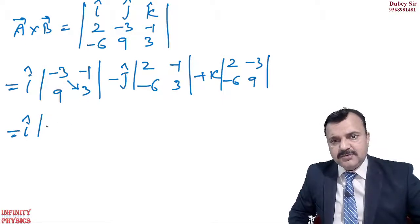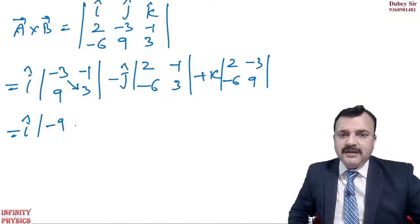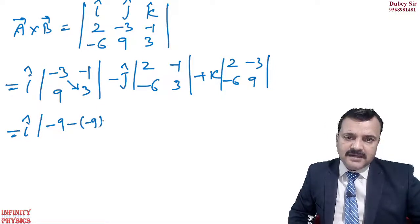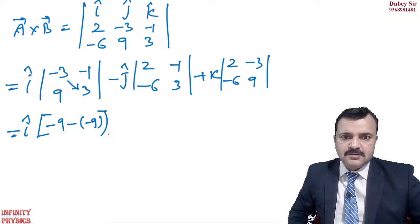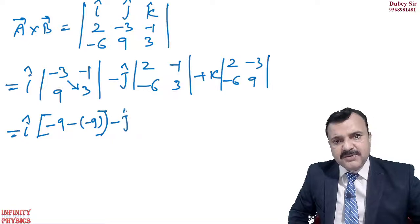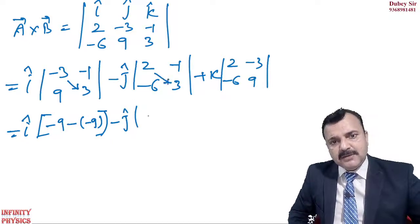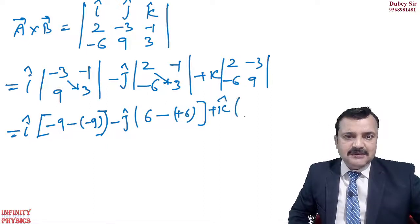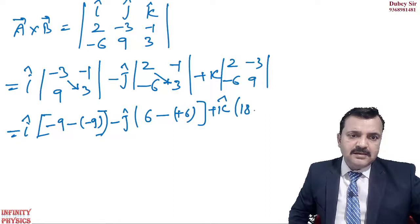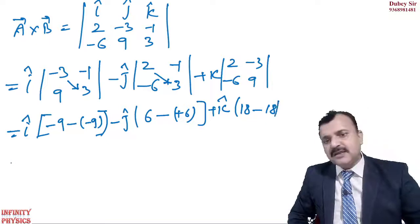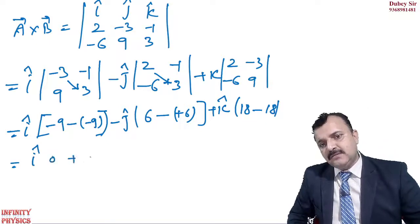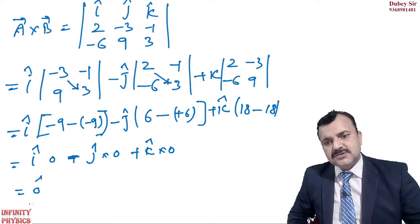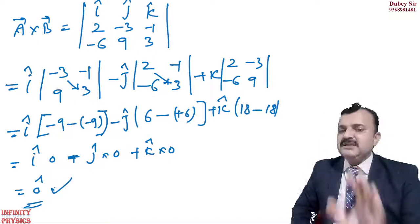For i cap: multiply (minus 1)(3) = minus 3, and (9)(minus 1) giving minus of minus 9, so plus. For minus j cap: (2)(3) = 6, minus (minus 6)(1) gives plus 6, so minus j into 0. For plus k cap: (9)(2) = 18, minus (minus 6)(3) = 18, so k into 0. Overall result is the zero vector — therefore A and B are parallel to each other.